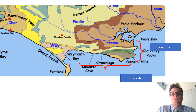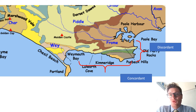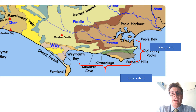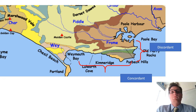Geological structure produces two dominant types of coast. Concordant coasts, highlighted here with the red bracket at the bottom, sometimes called Pacific coasts, are generated when rock strata run parallel to the coastline. Discordant coastlines, sometimes called Atlantic coasts, form when different rock strata intersect the coast at an angle.